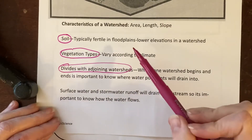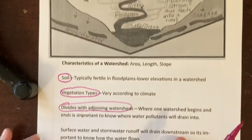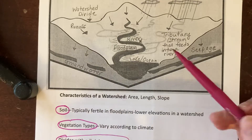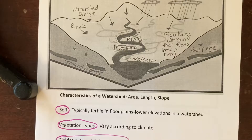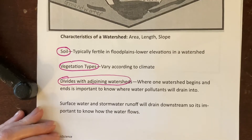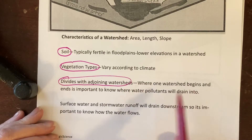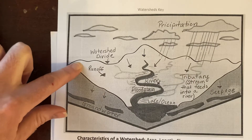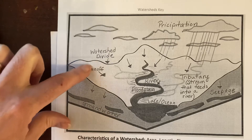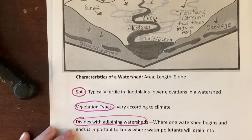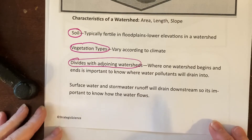In a watershed, soil is typically fertile at the lower elevations, so farming has taken place near rivers for thousands of years around the world — though you run the risk of flooding. The benefit was fertile soil in watersheds. Vegetation in watersheds varies according to climate. It's important to know where one watershed begins and ends because if you have a mine nearby — silver, copper, or coal — you need to know which river it drains into so you can do water testing for contaminants. This applies to logging and other industries that produce pollution.